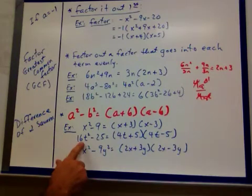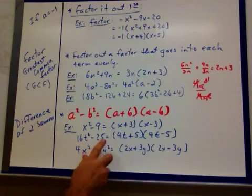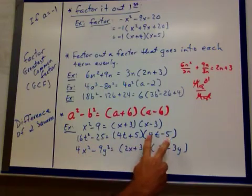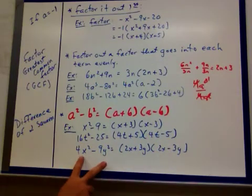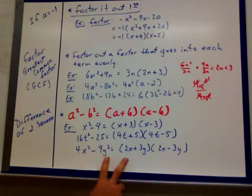The square root is 4T. The square root is 5. 4T plus 5. 4T minus 5. The square root is 2X. The square root is 3Y. 2X plus 3Y. 2X minus 3Y.